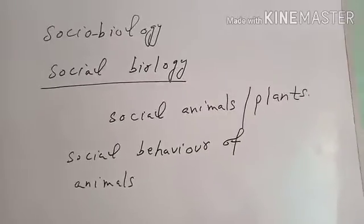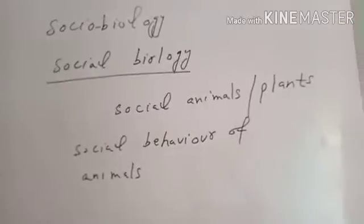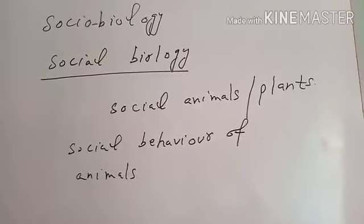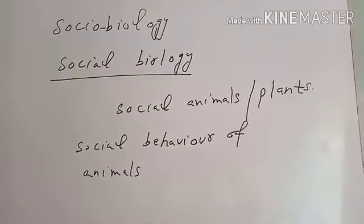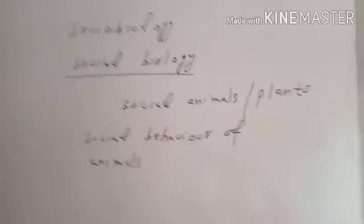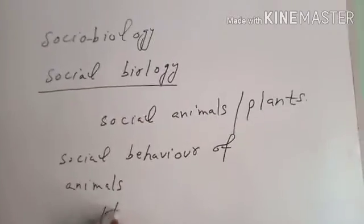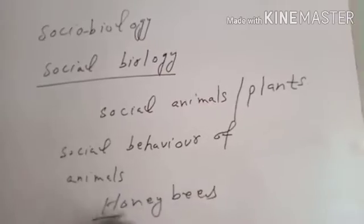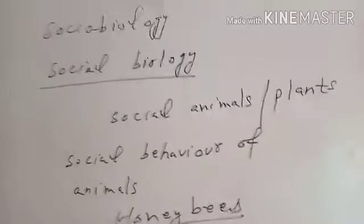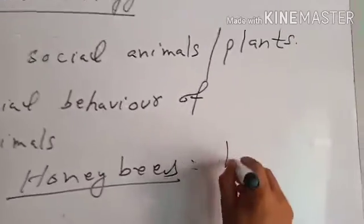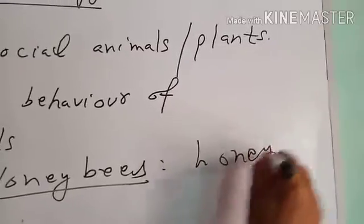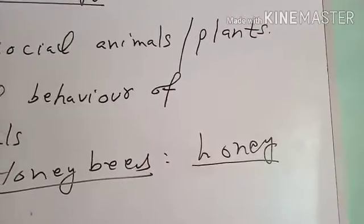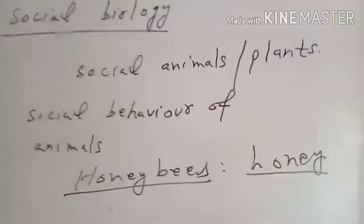Social animals are able to live in a society so that other organisms face no danger from that animal. For example, honey bees are social insects because they produce honey which is used as food by many organisms including human beings.